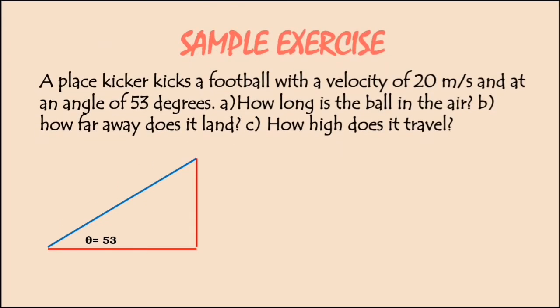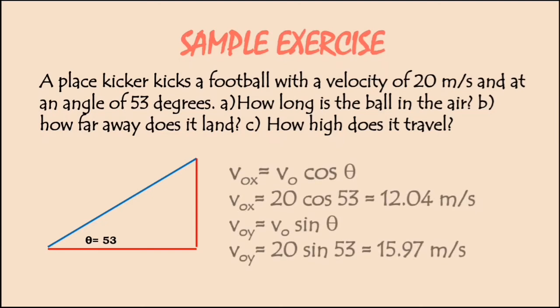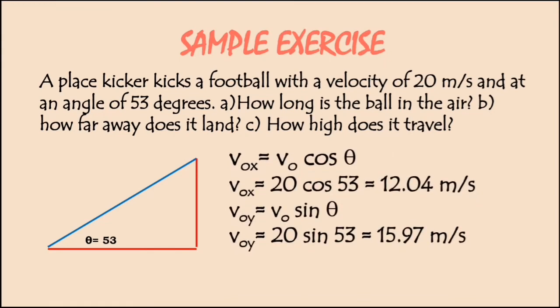Sample exercise. A place kicker kicks a football with a velocity of 20 meter per second and at an angle of 53 degrees. How long is the ball in the air, how far does it land, and how high does it travel? We're going to use the formula v_x = v cos θ. We're going to substitute the value: the velocity is 20 meter per second and the angle would be 53 degrees. 20 times cosine 53 would be 12.04 meter per second.